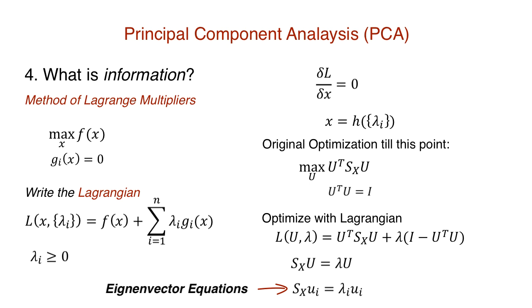This looks similar to an eigenvector equation, and we can solve it by eigendecomposition of the covariance matrix S x. However, S x is a d cross d matrix. Hence, if diagonalizable, it'll lead to d pairs of eigenvectors and eigenvalues. So how do we obtain m pairs from these d pairs? Let's talk about that.